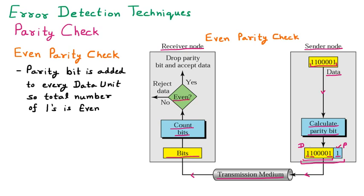We ask: is it even? If no, reject the data. If yes, drop the parity bit and accept the data. The parity bit we added earlier is dropped, the data is accepted, and given to the receiver.